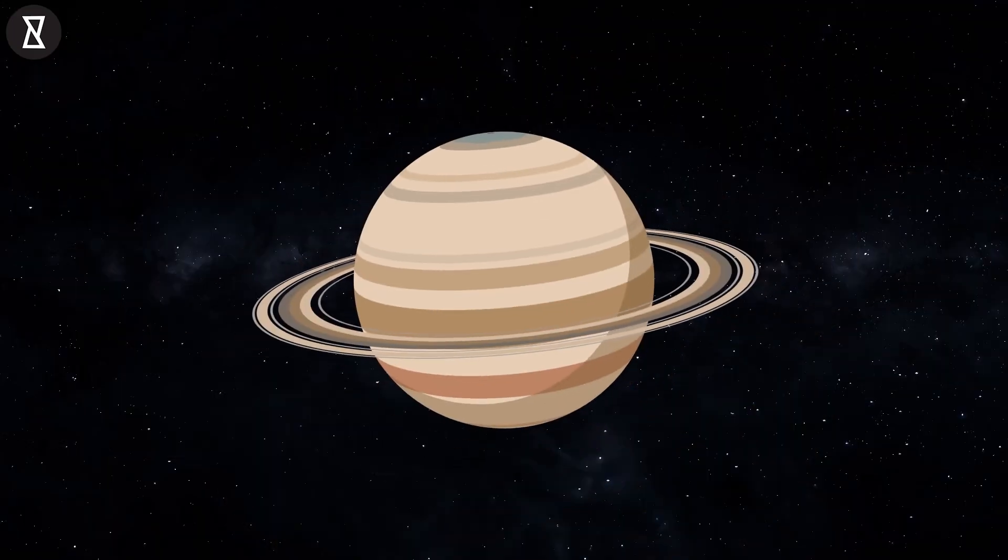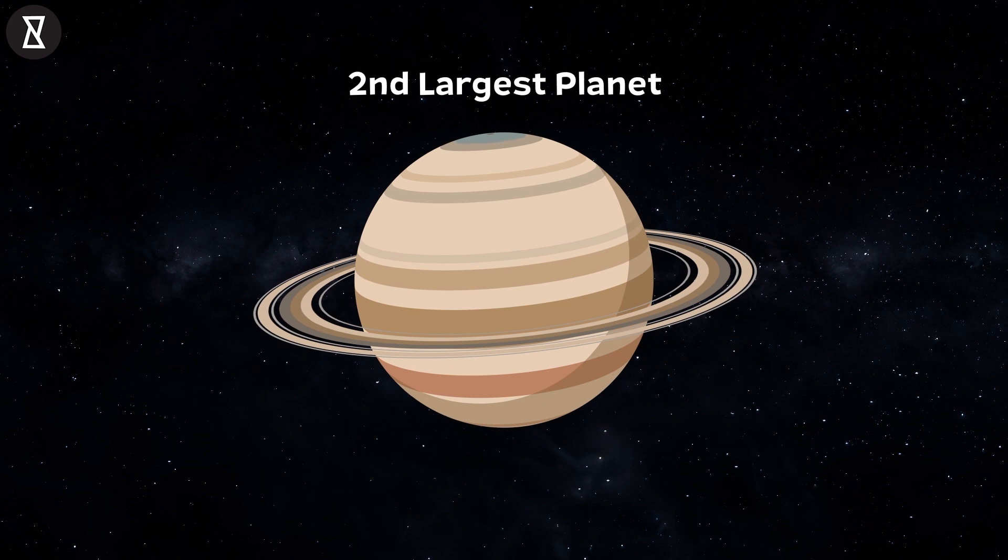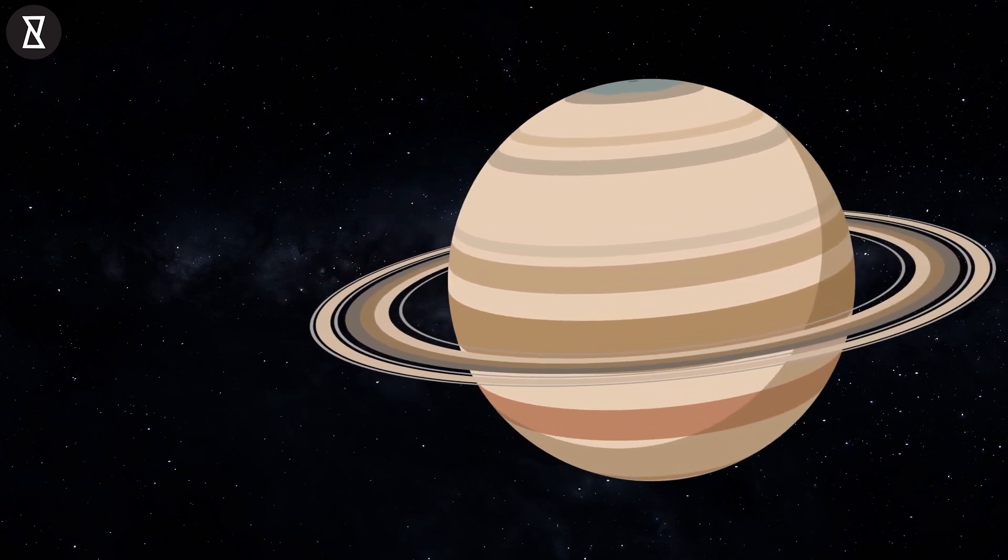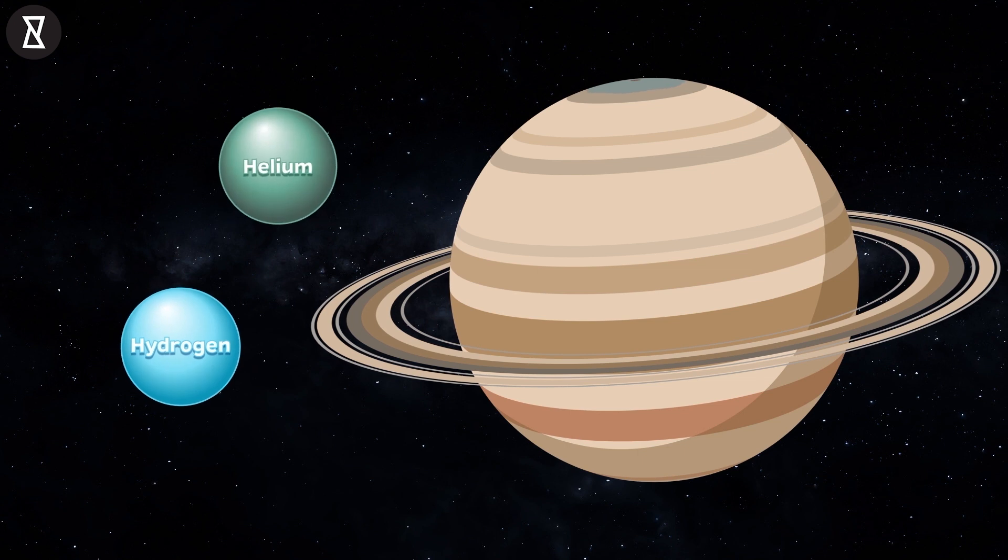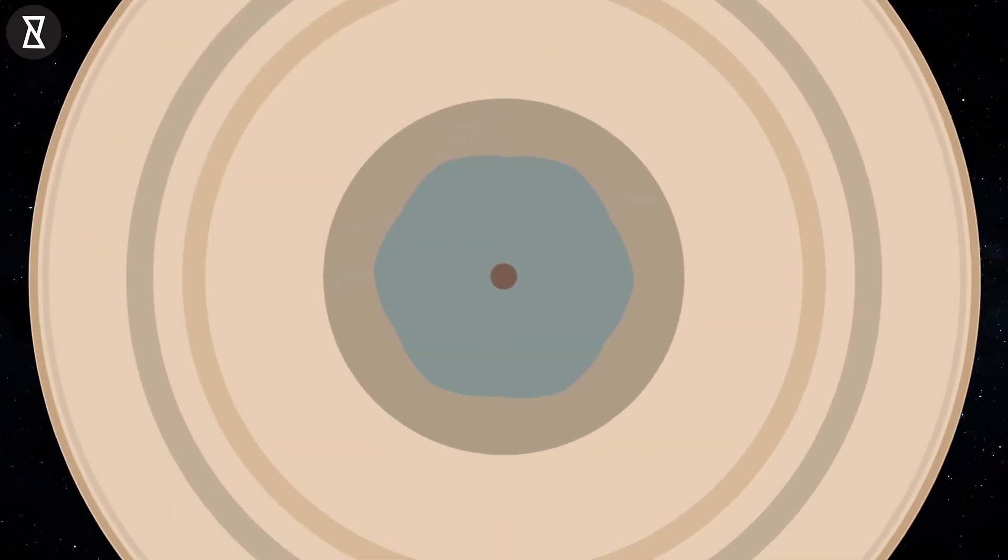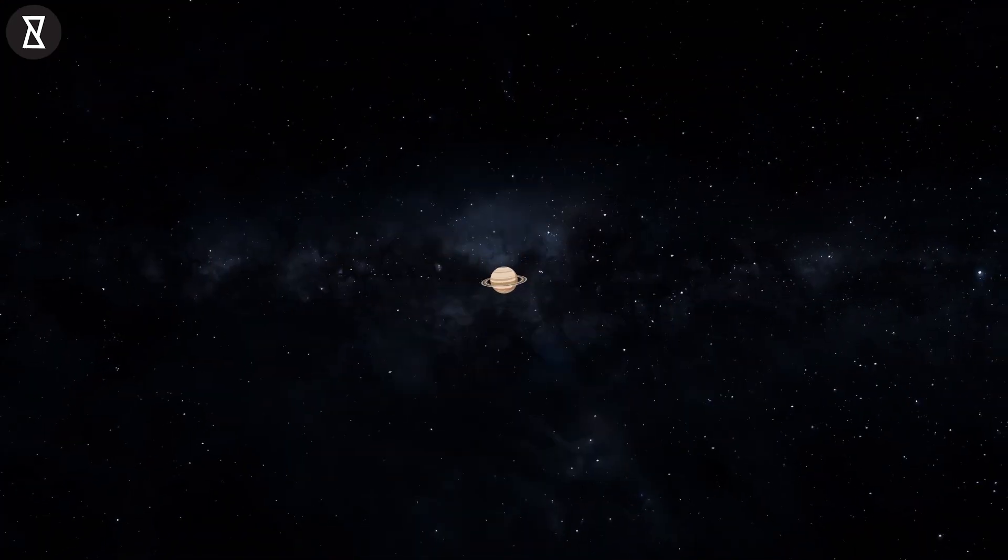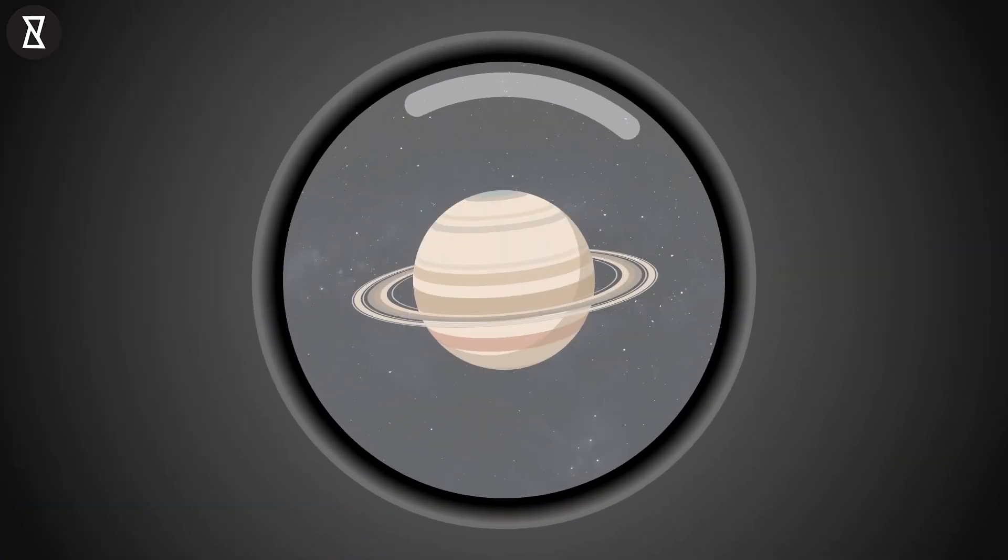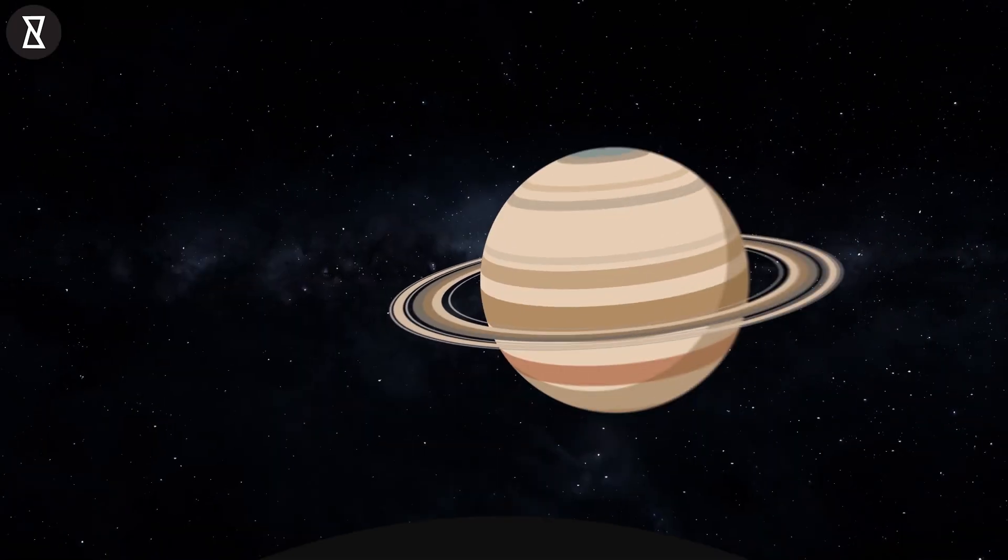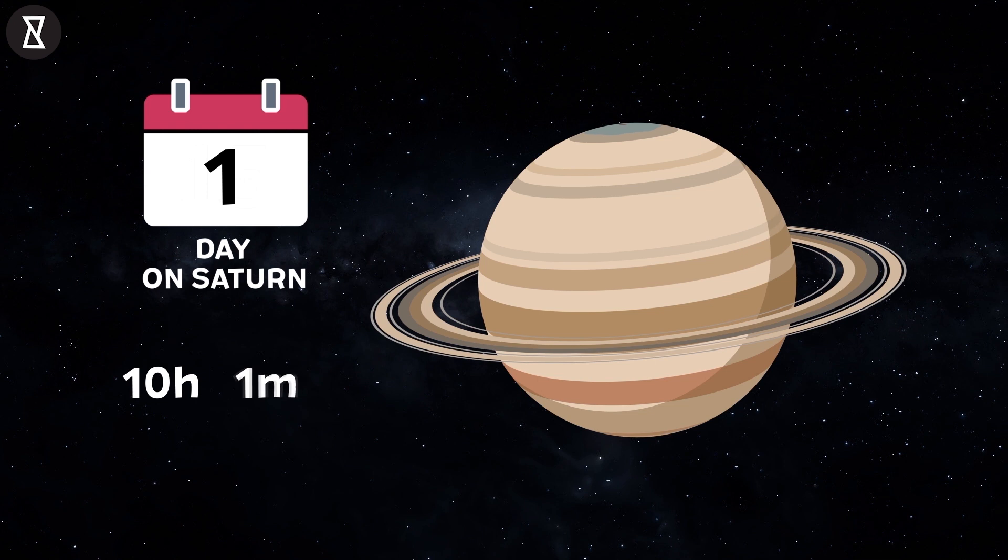Saturn. Saturn is the second largest planet in our solar system. Saturn is a massive ball made up mostly of hydrogen and helium. A giant hexagonal structure, which is thought to be composed of gases, revolves around the north pole of Saturn. Saturn has seven rings that can be seen even with a simple telescope. One day on Saturn is 10 hours and 42 minutes, while one year on Saturn is approximately 29 Earth years.